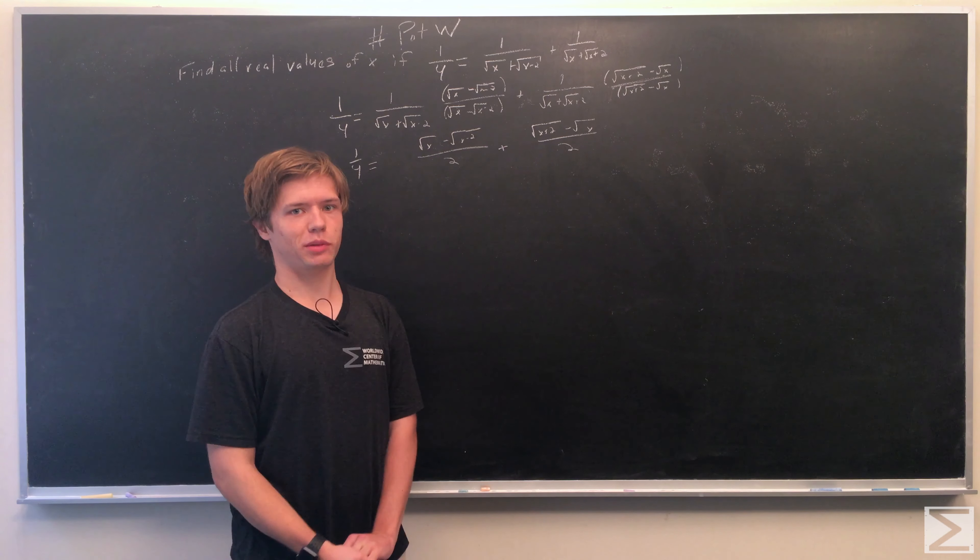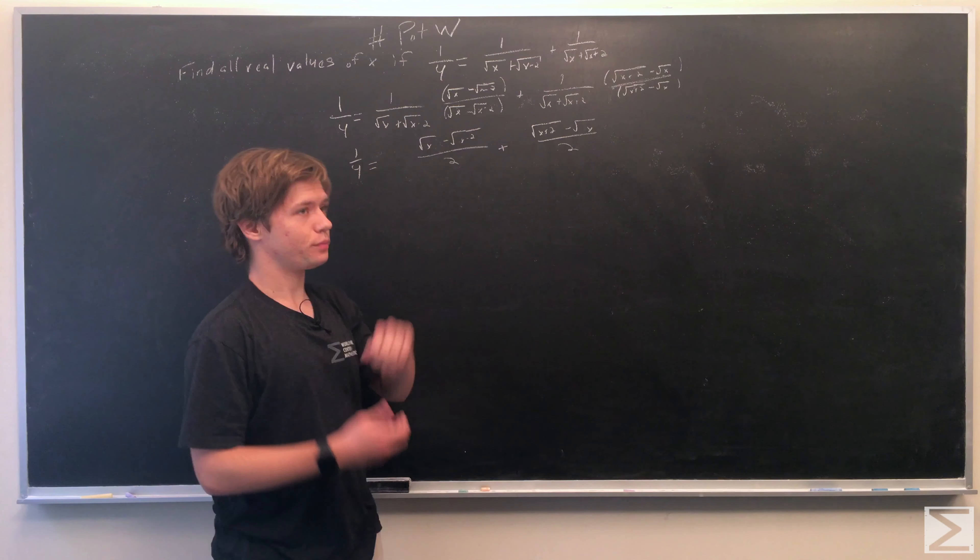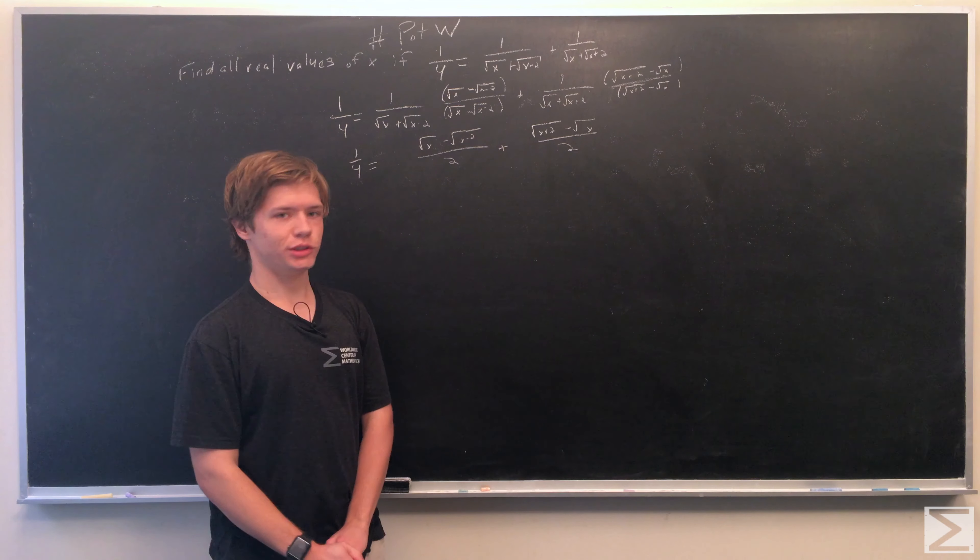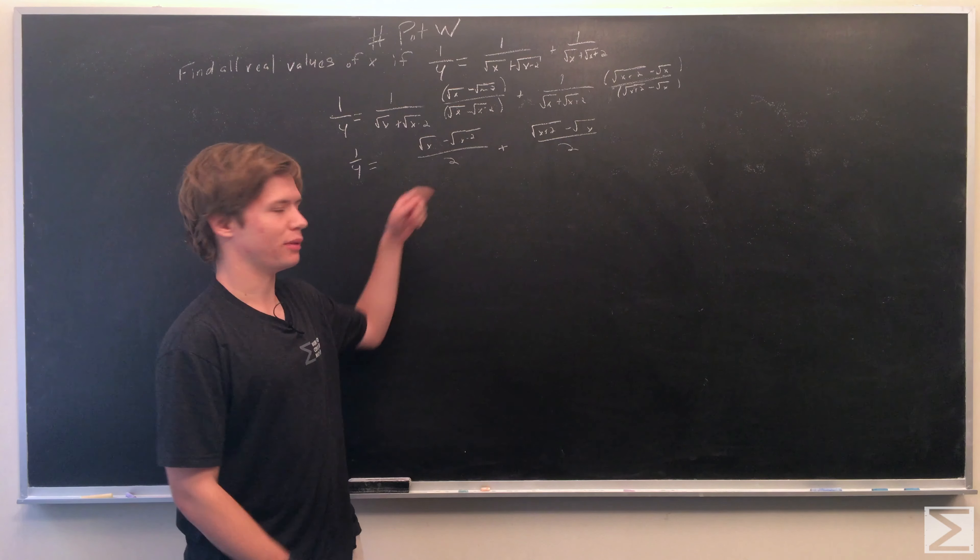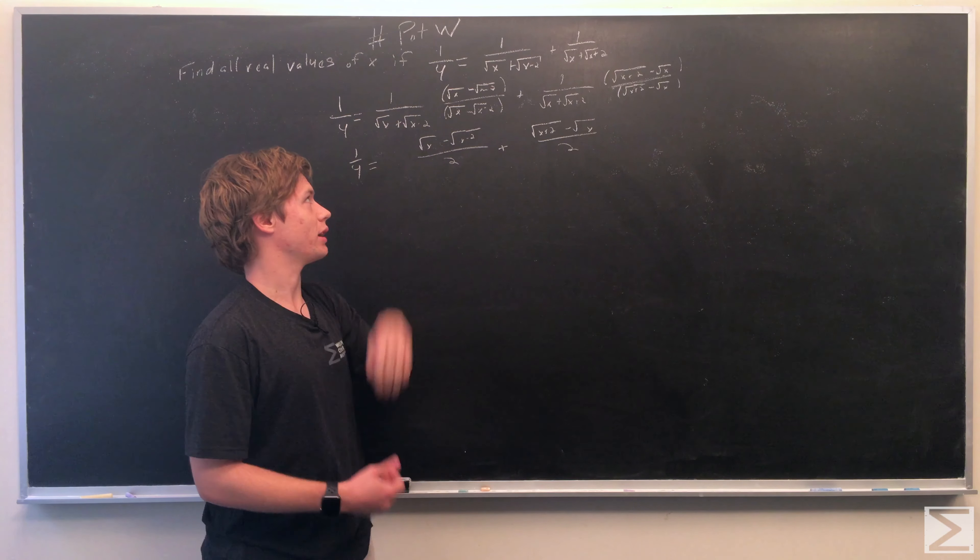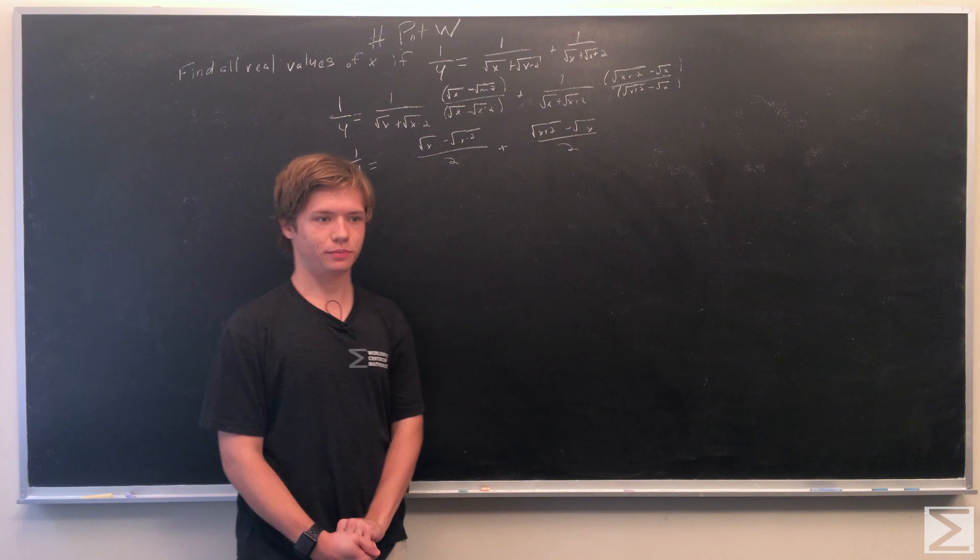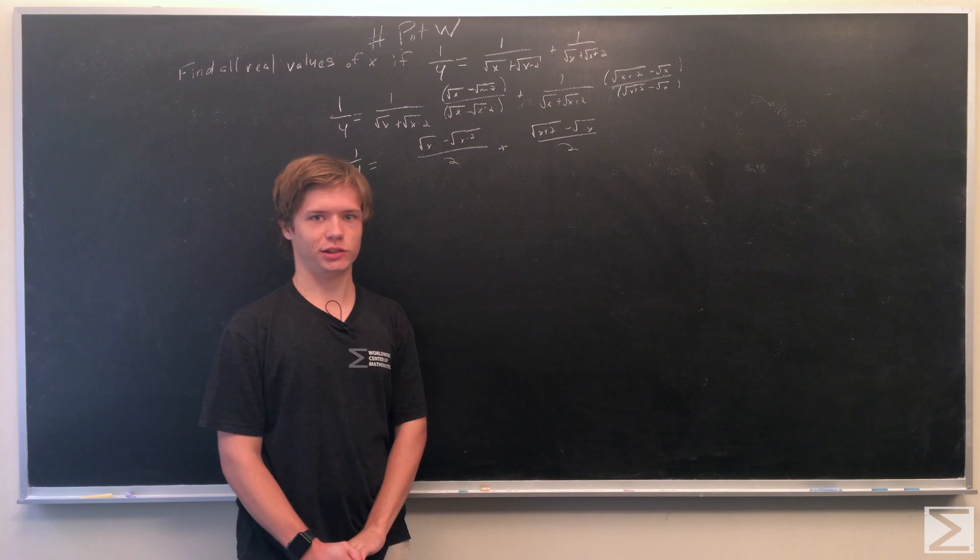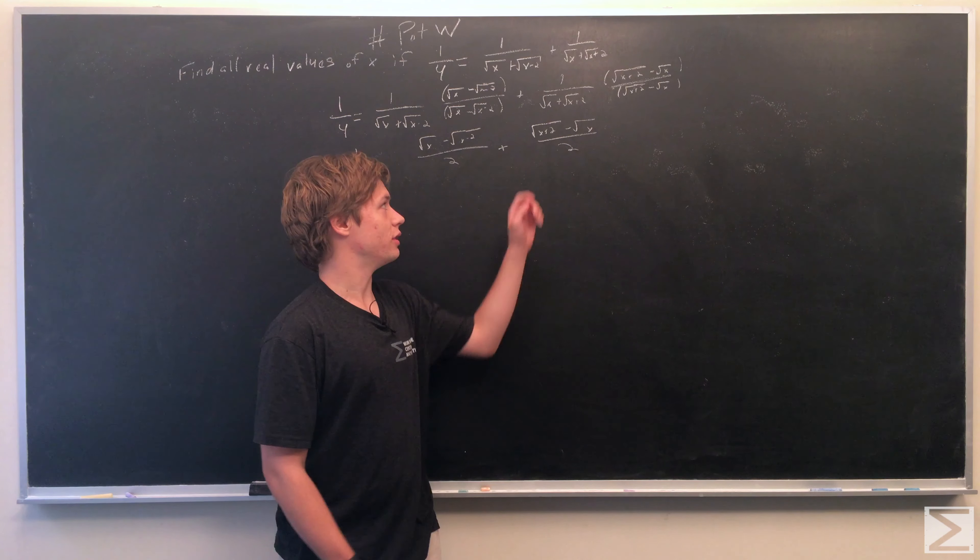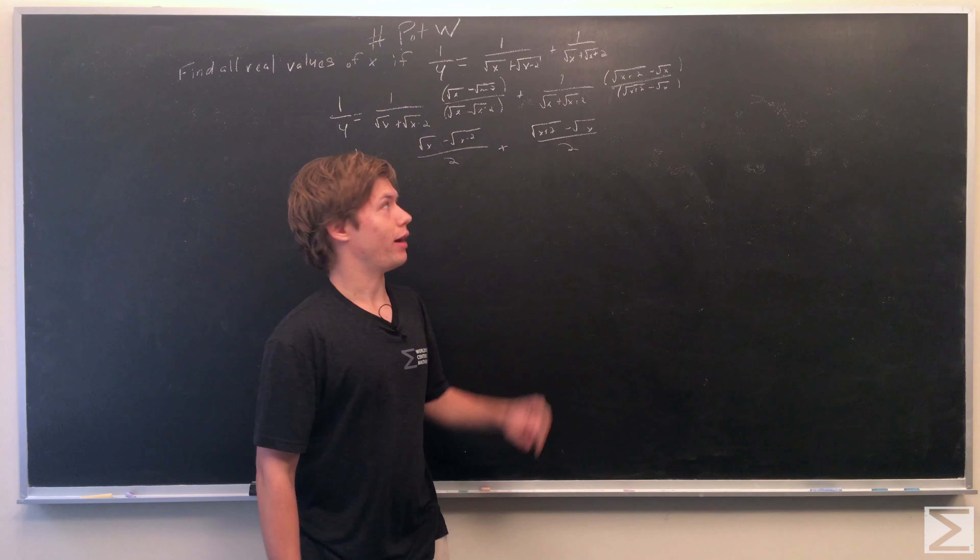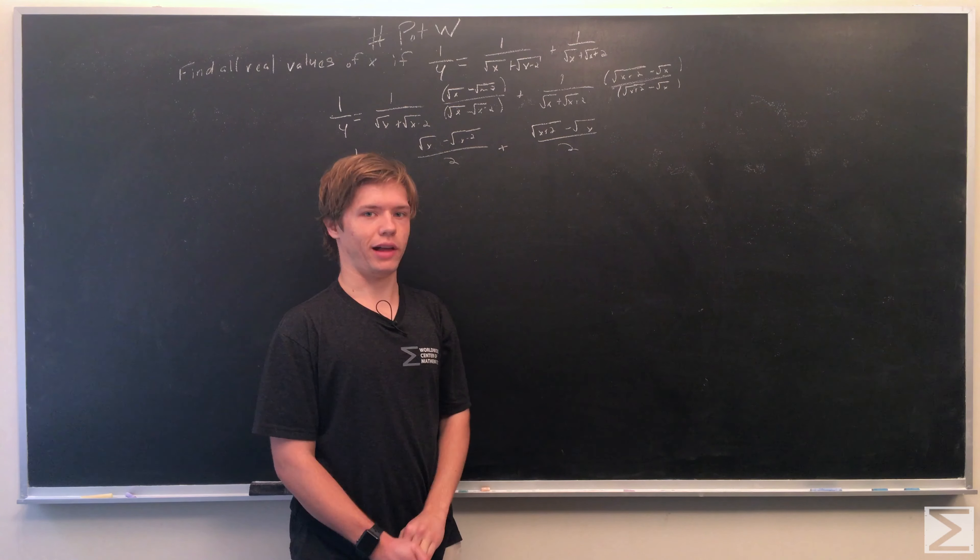When you multiply the top and bottom of the first term by (√x - √(x-2)), the bottom simplifies to 2. The top becomes (√x - √(x-2)). The same thing happens for the second term. The denominator simplifies to 2, and the top becomes (√(x+2) - √x).